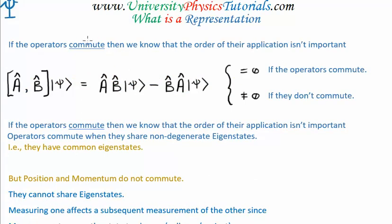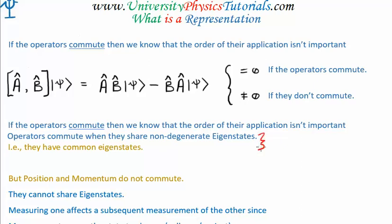We know that if operators commute, then the order of their application isn't important. This is the commutator between two arbitrary operators A and B. I recommend that you always operate on an arbitrary quantum state vector when doing calculations with operators, because it can be tricky otherwise. We see that if the commutator is zero, then the operators commute; if it's non-zero, the operators don't commute. If the operators commute, they share non-degenerate eigenstates — we can say they can have common eigenstates.